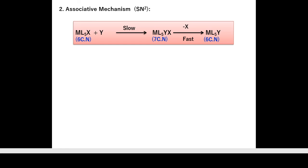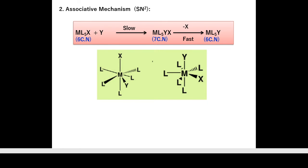The intermediate ML₅XY in the associative mechanism has coordination number 7. There are two possible geometries for the seven-coordinate intermediate: capped octahedron and pentagonal bipyramidal. So in SN1 the intermediates are trigonal bipyramidal or square pyramidal, and in SN2 they are capped octahedron or pentagonal bipyramidal.